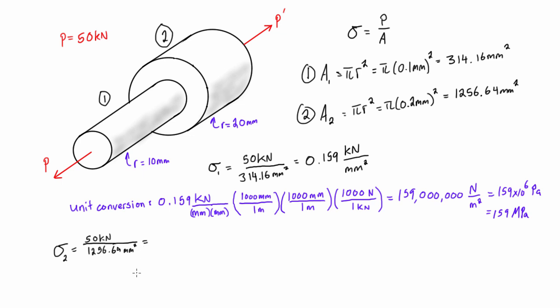That gives us a value here of 0.0389 kilonewtons per millimeter squared. Now it is probably a good thing to memorize two things here about units. If we have kilonewtons per millimeter squared, this is actually giving you the number in gigapascals. And also if you have newtons per millimeter squared, that is already in megapascals.